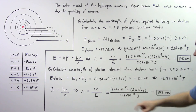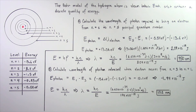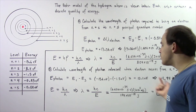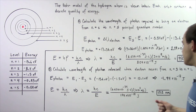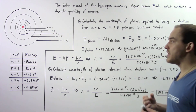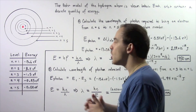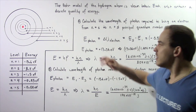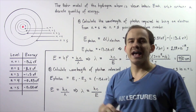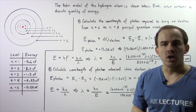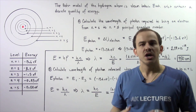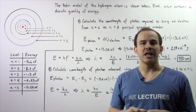Using 1.94 times 10 to the negative 18 joules, this gives us a wavelength of about 102 nanometers. This corresponds to the wavelength of the photon that is released when the electron jumps from n equals 3 to n equals 1, as the electron loses potential energy.